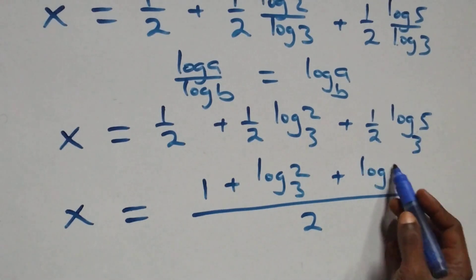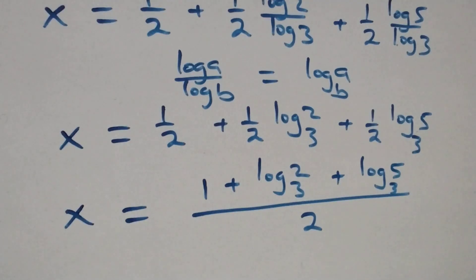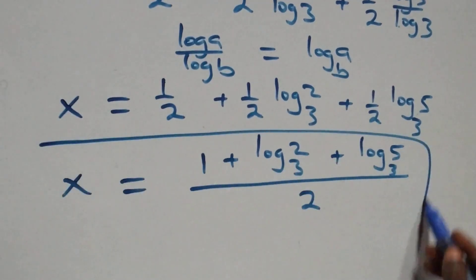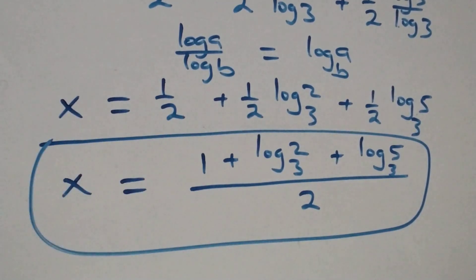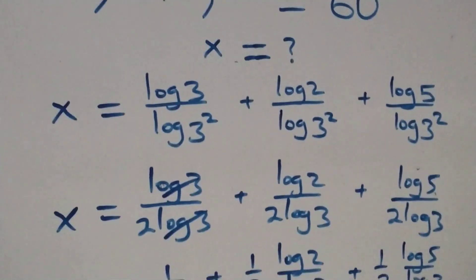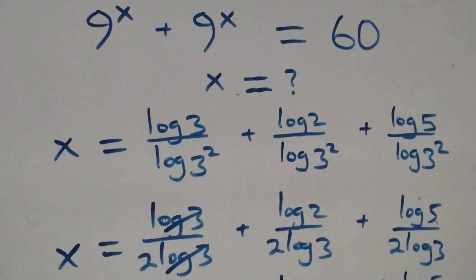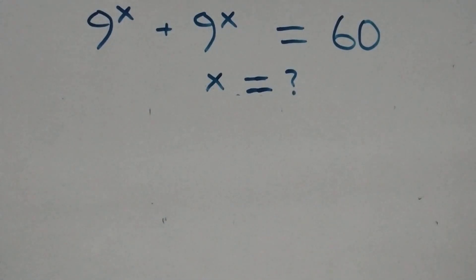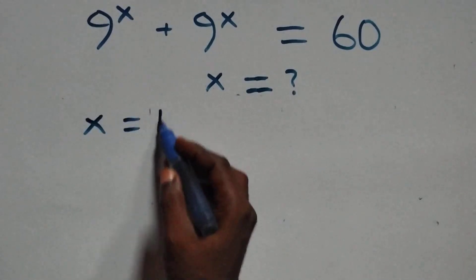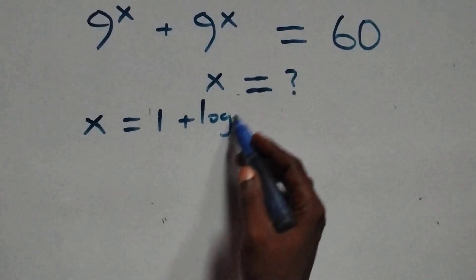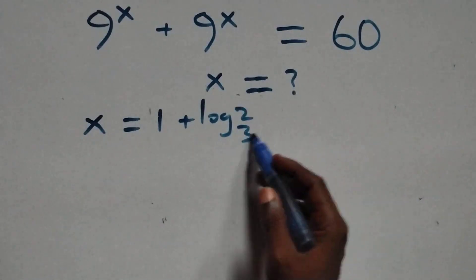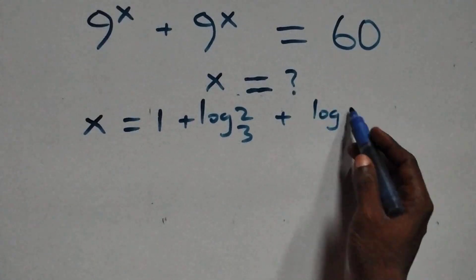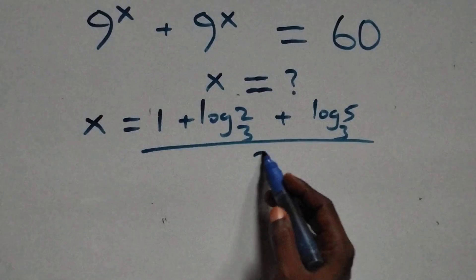Bringing this together, the value of x is: 1 plus log 2 base 3 plus log 5 base 3, all over 2. Now let's check if this satisfies the given problem. We substitute the value of x, which is x equals (1 plus log₃2 plus log₃5) over 2.